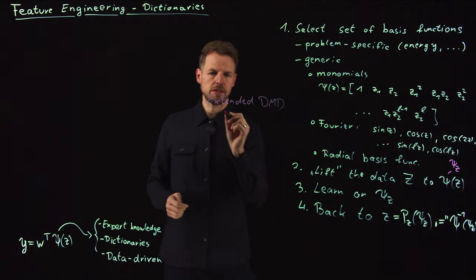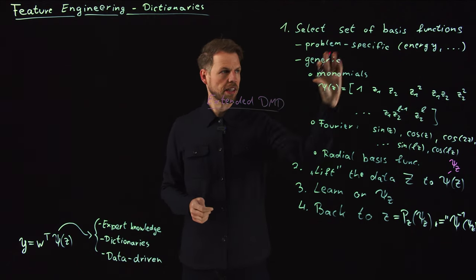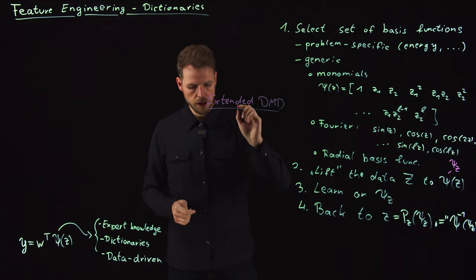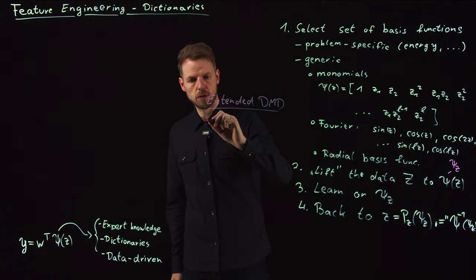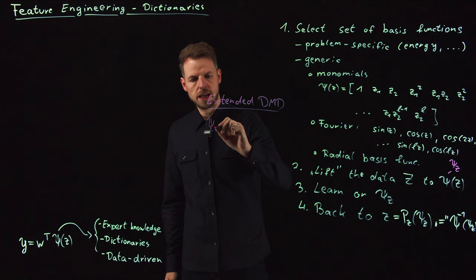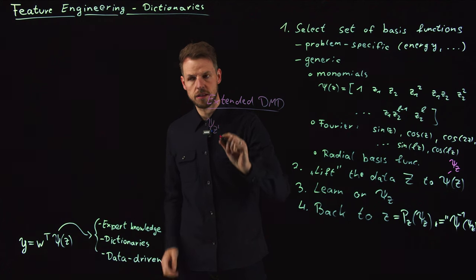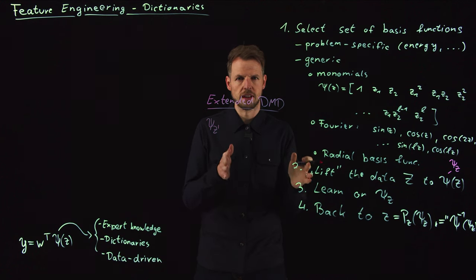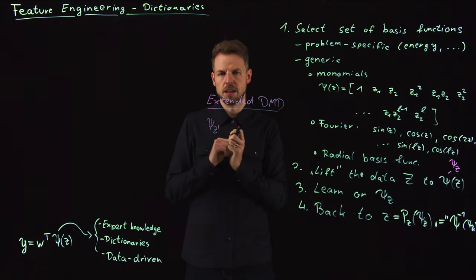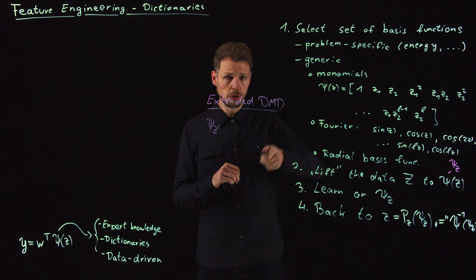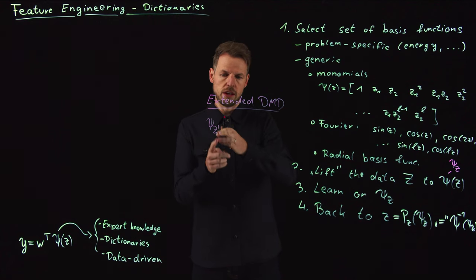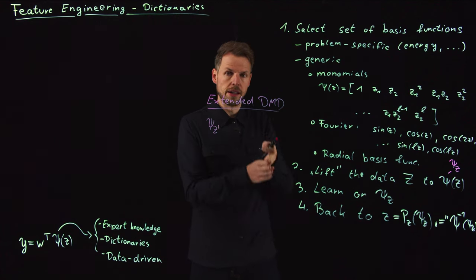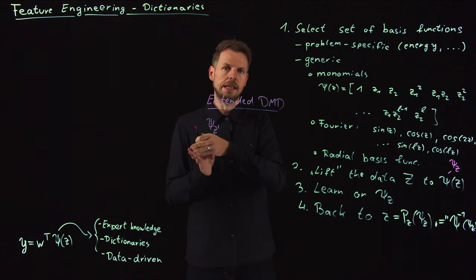And so the idea is very simple and follows exactly this procedure. So what we're going to do is we are going to say we lift our data. And remember in DMD we had the data matrix and the Z dash was the same data matrix except it was shifted one time step ahead. So every column of Z is related to every column of Z dash by a one time step linear system.